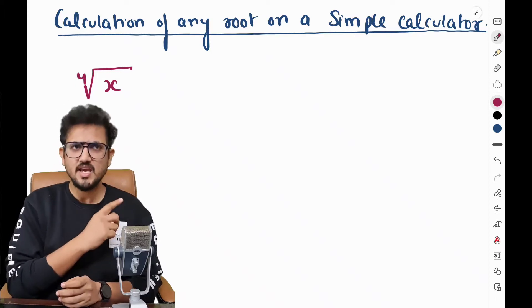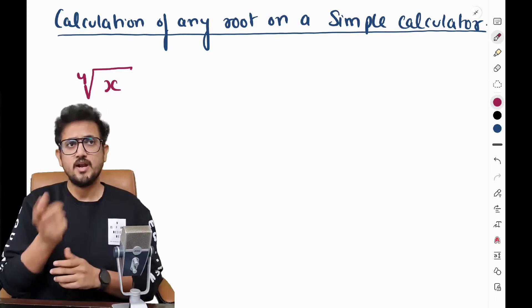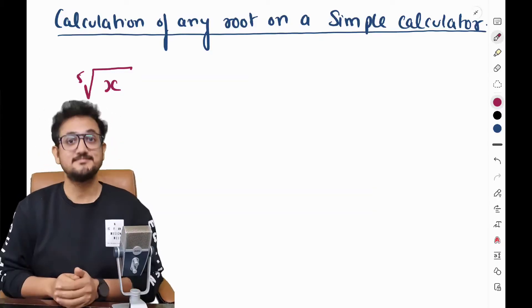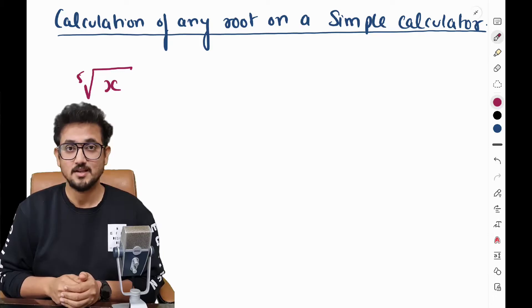What about this? Sir, we can calculate this. We have to write the number and press the root button two times. Yes, you are right. Now, what about this? Not easy. Okay.